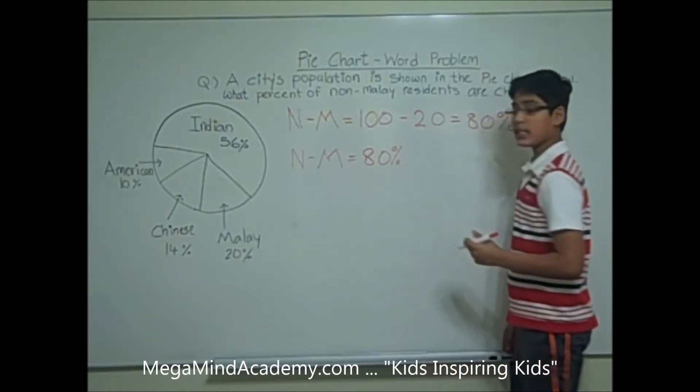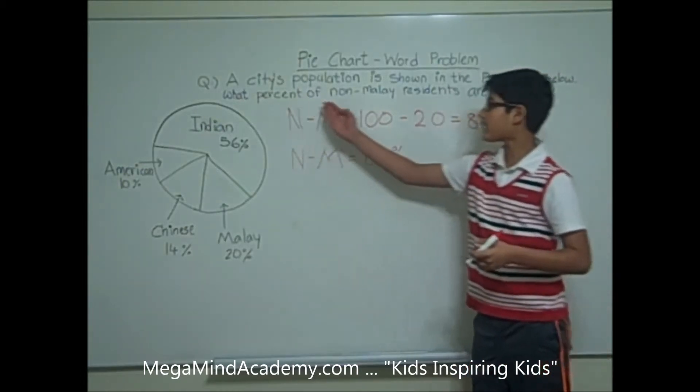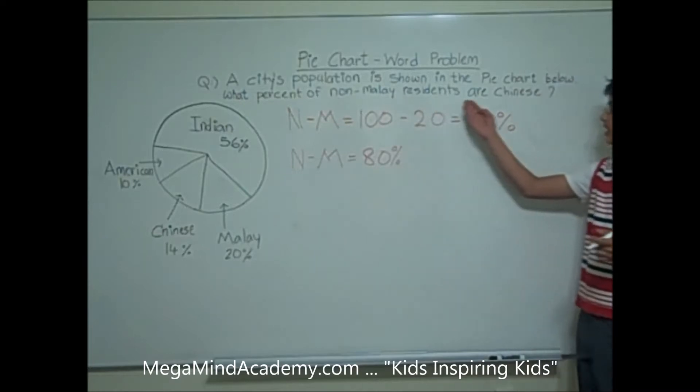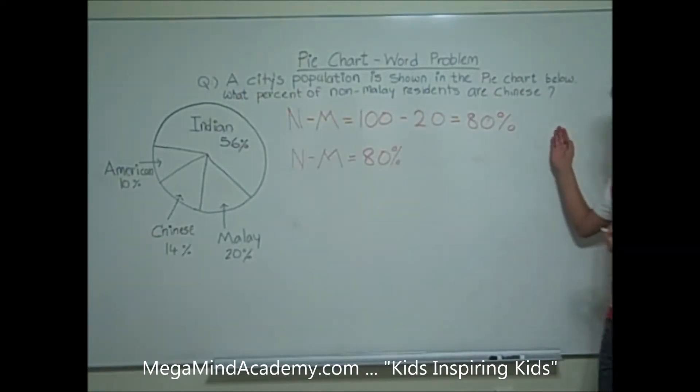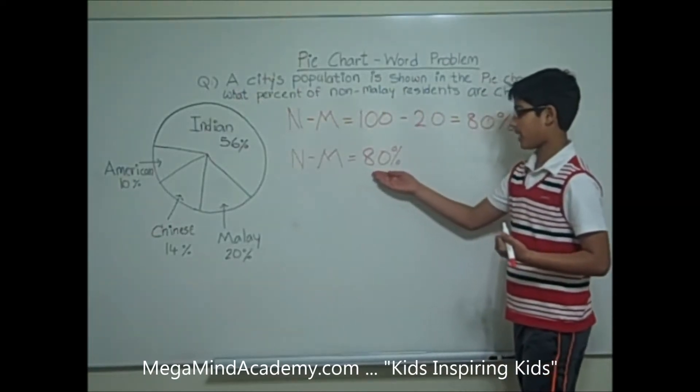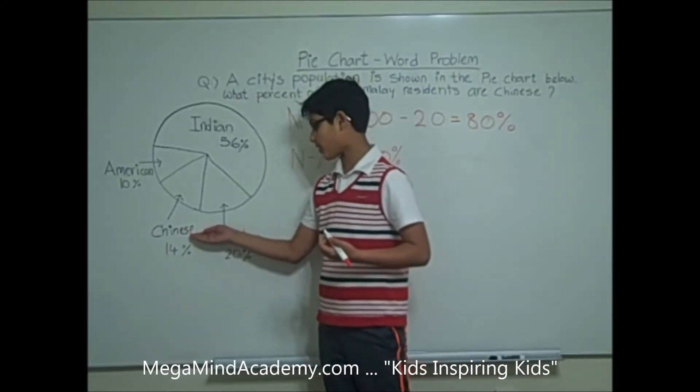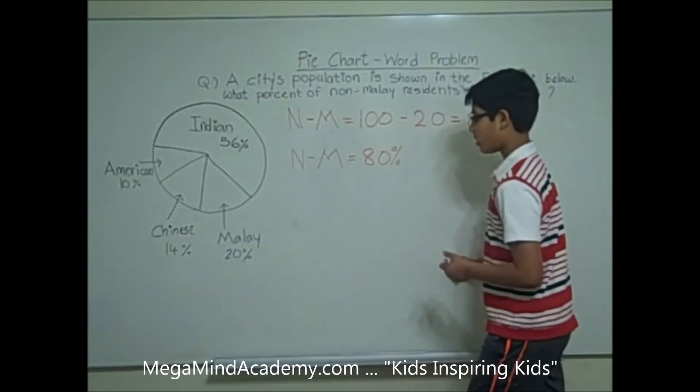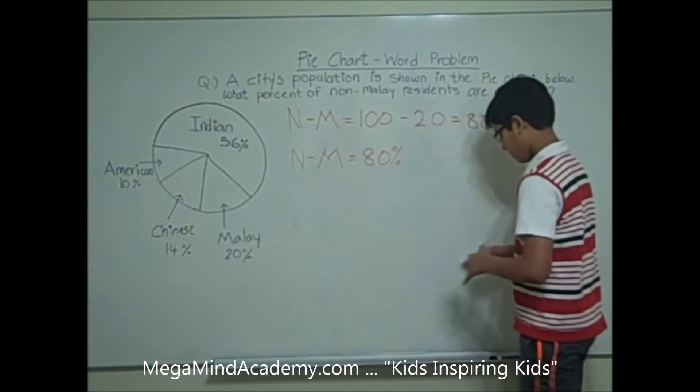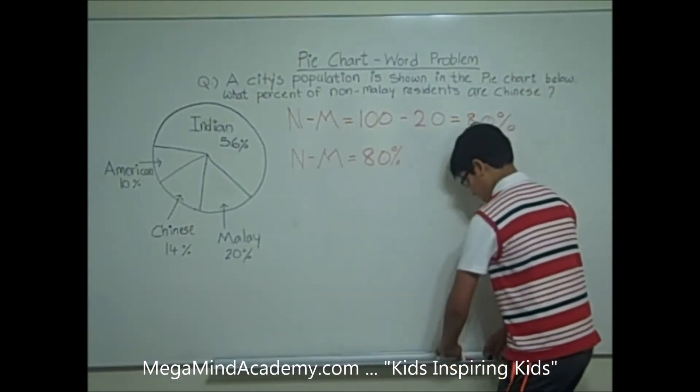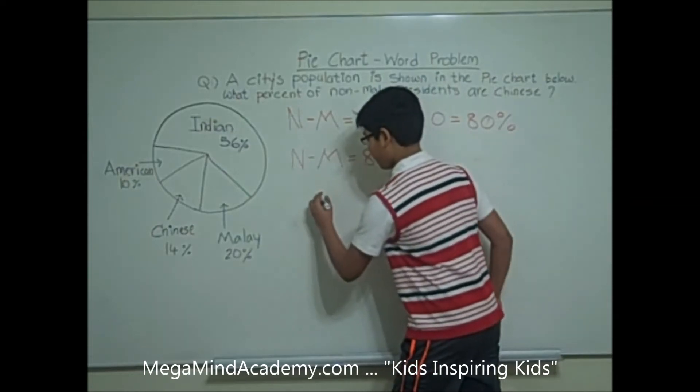Now, in this problem, we are supposed to find what percent of the non-Malay residents are Chinese. When there are 80% of non-Malay residents, there are 14% of Chinese residents. So, let's label this column non-Malay residents.